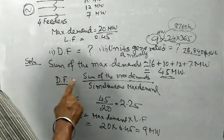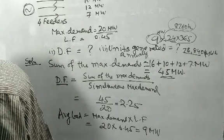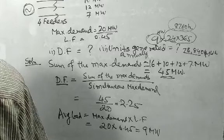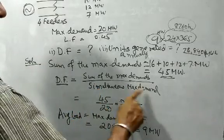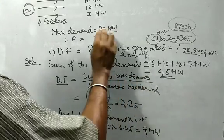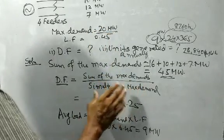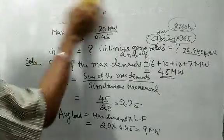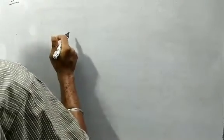To summarize question 2: the diversity factor is the sum of the individual maximum demands divided by the maximum demand on the system. The simultaneous maximum demand is 20 megawatts, so the diversity factor is 2.25. Now let us do question number 3.